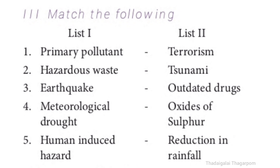Next, Roman No. 3: Match the following. List one: First - primary pollutant. Second - hazardous waste. Third - earthquake. Fourth - meteorological drought. Fifth - human-induced hazard.